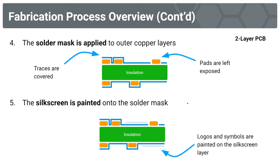Our next step is to apply the solder mask on top of our outer copper layers. Remember that traces are covered, but pads are left exposed because the pads will be our connection to the component leads — we'll solder the leads to the pads. Lastly, we paint the silkscreen onto the solder mask. Remember that the silkscreen is for our logos, symbols, and component markings. And that's it for PCB fabrication.